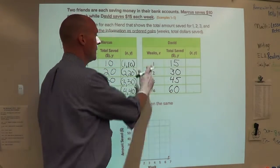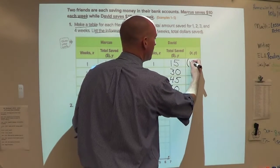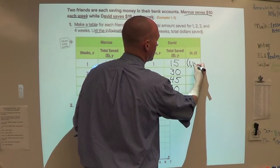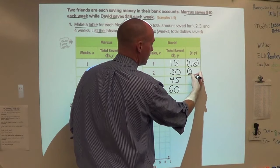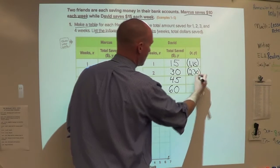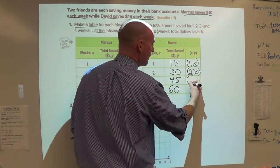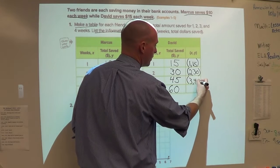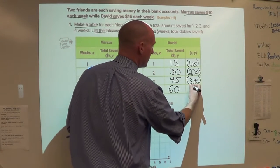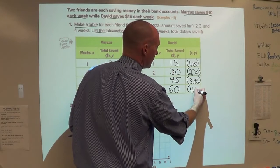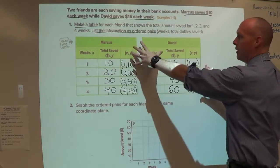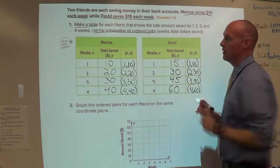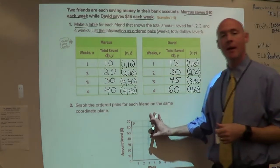Table's done. Now let's list this ordered pair: (1,15), (2,30), (3,45), and (4,60). Excellent. So that part's done. We've made a table, we've listed the information as ordered pairs. Now let's move on to part two.